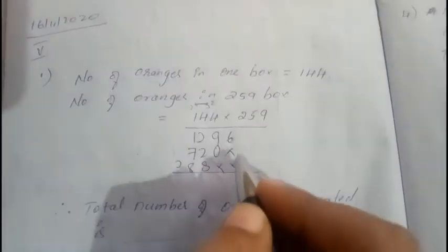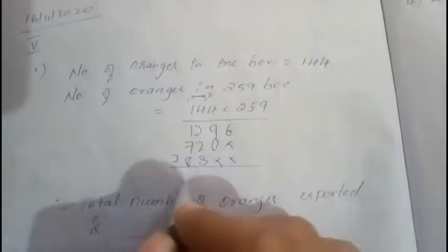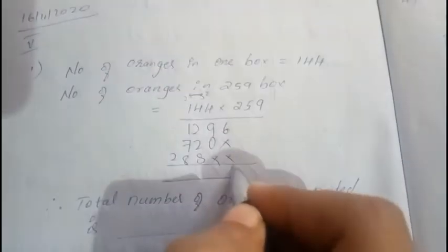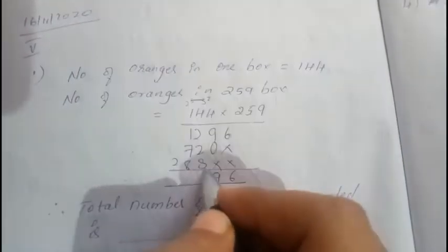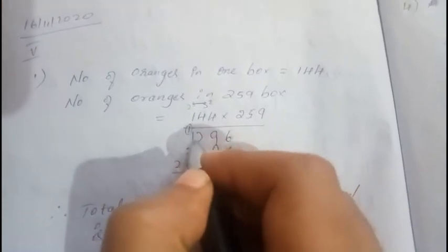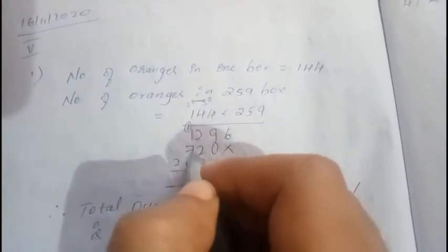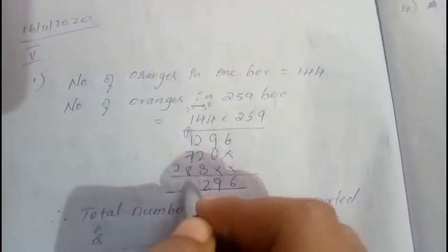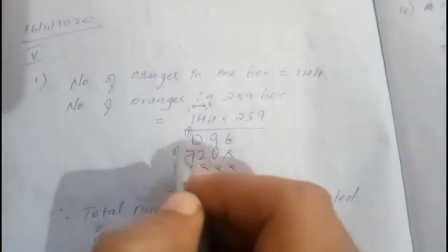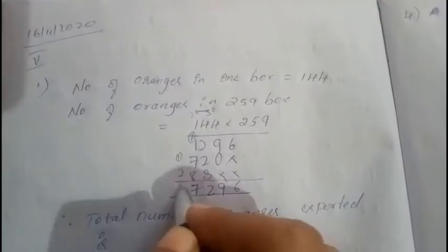Now I add all of them. 6, 9 plus 2 is 12, write 2 carry 1. 1 plus 1 is 2, 2 plus 7 is 9. 9 plus 8 is 17, write 7 carry 1. 1 plus 2 is 3. So this will be the answer.